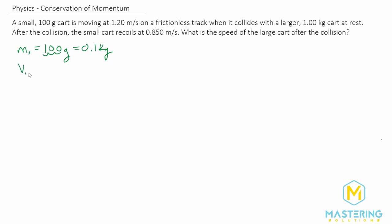The first cart is moving at V1 initial equal to 1.2 meters per second on the frictionless track. When it collides with a larger m2 of 1.0 kilograms cart at rest, so its V2 initial is 0 meters per second.